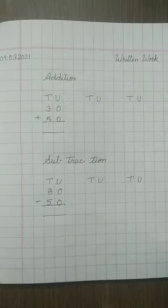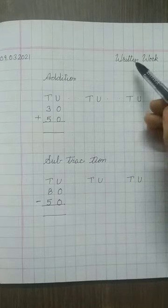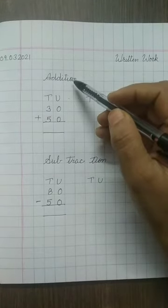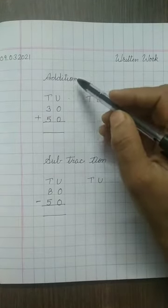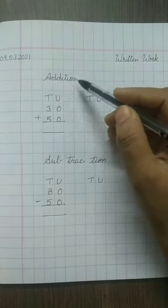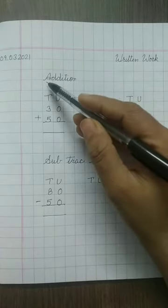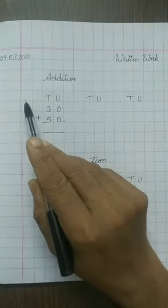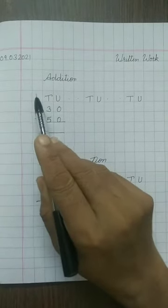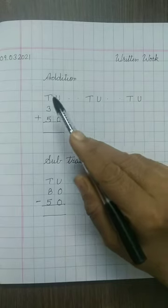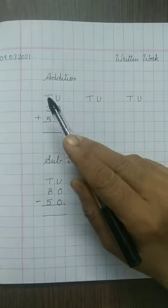Kids, it's practice time. First of all we will mention the same date and 'return work' in the first line. Leave one box and write the heading in the third line: Addition. A-D-D-I-T-I-O-N, Addition. A should be capital. Again leave one box from the margin line. Leave two boxes and write T, U. Here U stands for unit or ones and T stands for tens.